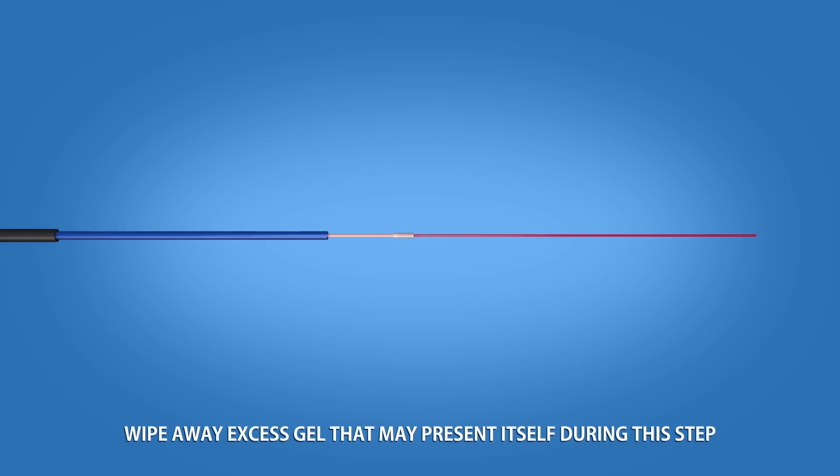Next, cut the clear protective tubing to a length of 6 inches. Slide the clear tubing over the 250 micron fiber and push the tubing into the buffer tube.